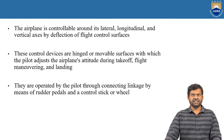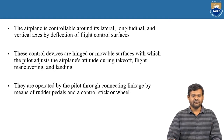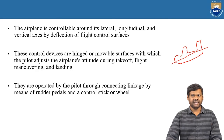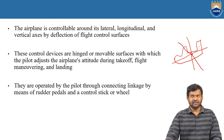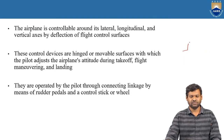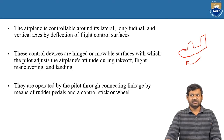The airplane is controllable around its lateral, longitudinal, and vertical axis by deflection of flight controls. For example, when you take an airplane, this is called the longitudinal axis, this is the vertical axis, and along the wing there is another axis. During take-off and landing, the motion of an aircraft is along the lateral axis, and the plane rotates in this direction.